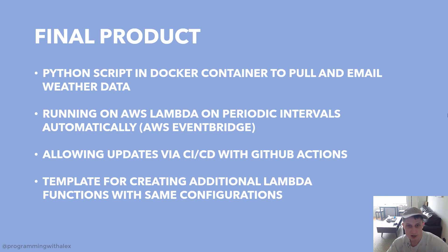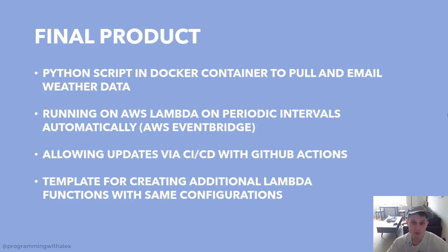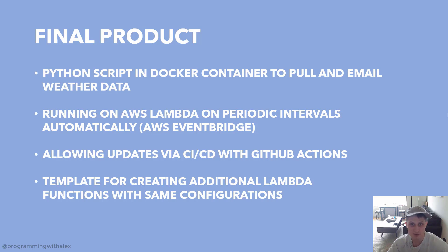So to start off, what's the final product going to be? It's going to be a Python script inside of a Docker container that's going to pull weather API data and email that data to us. We're going to have this Lambda function run on periodic intervals automatically using AWS EventBridge. We're also going to allow updates to the code using CI-CD pipelines with GitHub Actions, where CI-CD stands for continuous integration and continuous deployment. And we're also going to create a template for creating additional Lambda functions with the same configurations automatically, without having to do any manual creation on the AWS Management Console.